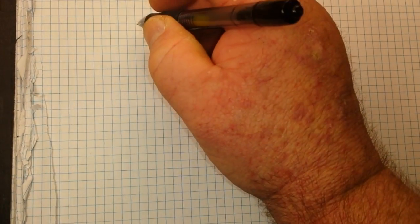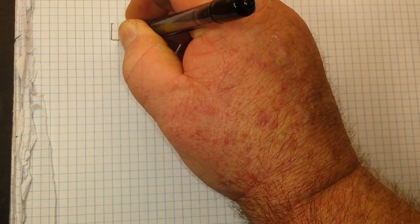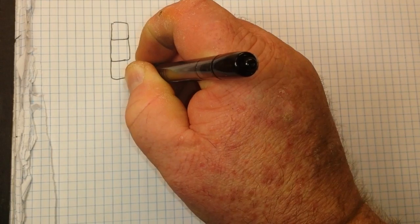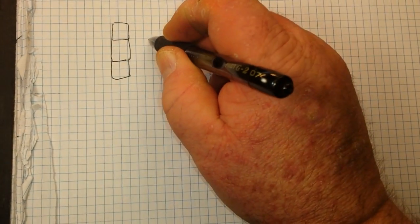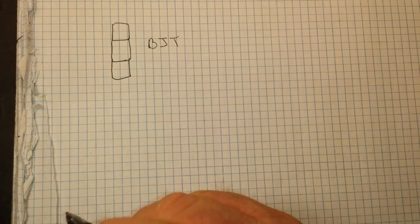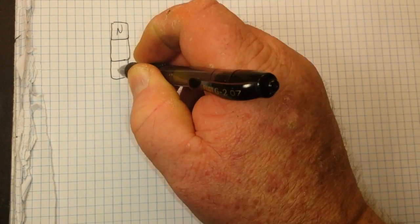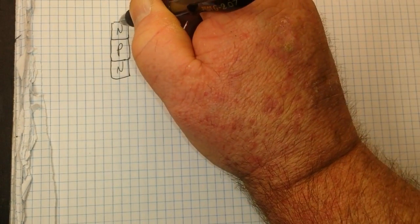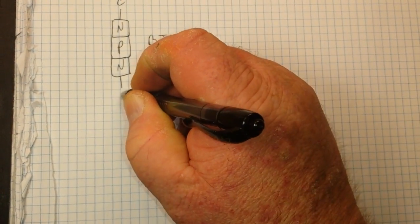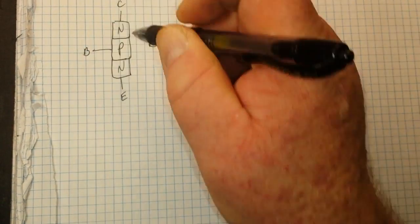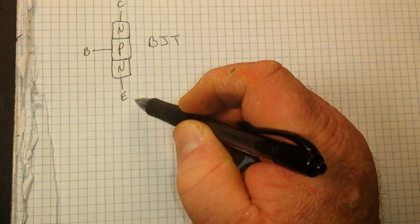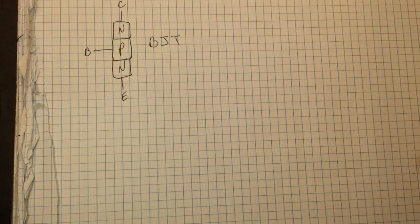So let's just talk real briefly here about the layout of a BJT, a bipolar junction transistor. In this case it will be an NPN, so we have our two N's on the end, P in the middle, that's our collector, that's our emitter, and that's our base. A small current into the base allows a larger current to flow from collector to emitter. That's the BJT principle.